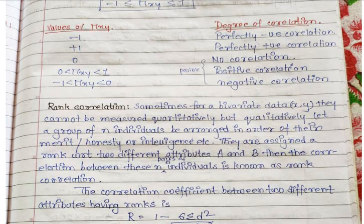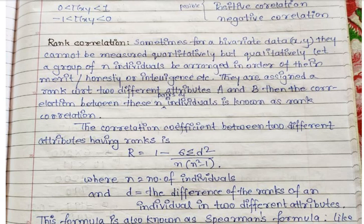If the correlation coefficient lies between 0 and 1, the variables are positively correlated; between −1 and 0, they are negatively correlated. Next, we come to rank correlation. Rank correlation is used when bivariate data is measured not quantitatively but qualitatively — for example, measuring the merit, intelligence, IQ level, or behavior of students, which are qualitative in nature.